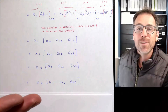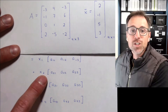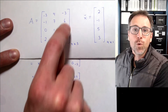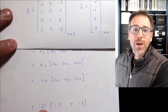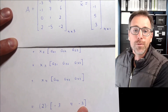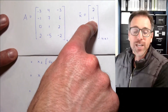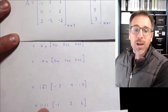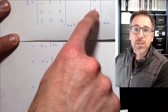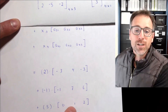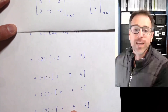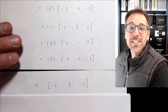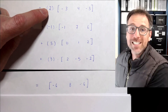Now I can use the given data to fill things in. x1 times the first row of A: x1 is 2 and row 1 is [-3, 4, 3], giving 2 times [-3, 4, 3]. x2 is -1 and row 2 is [-1, 7, 6], giving plus -1 times [-1, 7, 6]. x3 is 5 and row 3 is [0, 1, 2]. x4 is 3 and row 4 is [2, -5, -2], giving the complete expression with all given data.